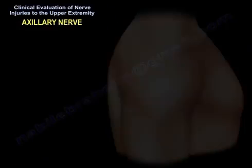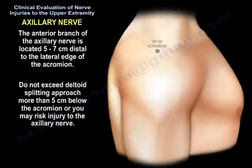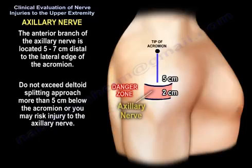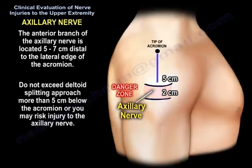The anterior branch of the axillary nerve is located 5 to 7 cm distal to the lateral edge of the acromion. Do not exceed the deltoid splitting approach more than 5 cm below the acromion, or you may risk injury to the axillary nerve.